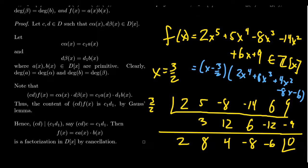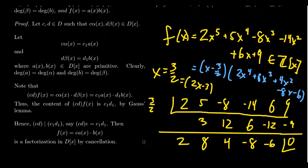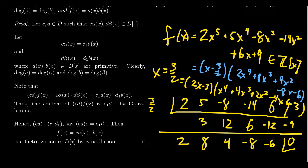Notice that the polynomial 2x^4 + 8x^3 + 4x^2 − 8x − 6, viewed as an integer polynomial, has content 2 — all coefficients are even. Factor out that 2, and you can redistribute it to clear the denominator, giving the integer factorization f(x) = (2x − 3)(x^4 + 4x^3 + 2x^2 − 4x − 3). So we turned a factorization over the rationals into a factorization over the integers.